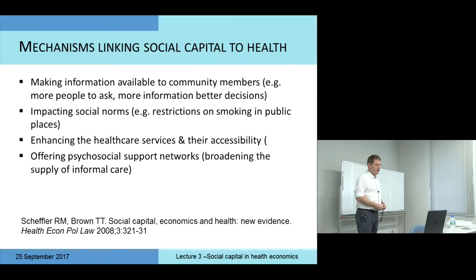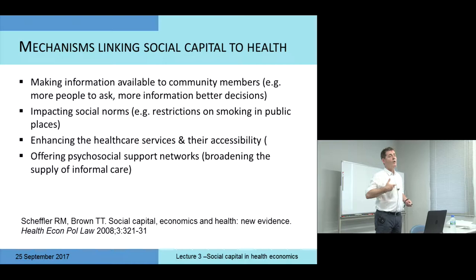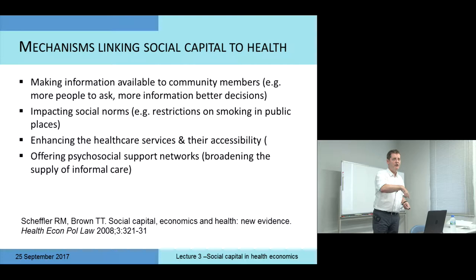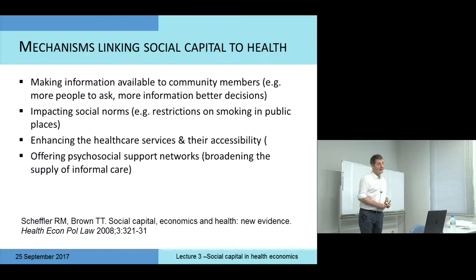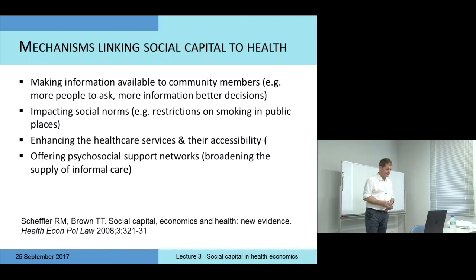We'll come to another example: social norms. In some descriptions of social capital it's framed in terms of social norms, with the view that a social norm can influence people's behaviour in a very positive direction. But we can also think social norms might go in the wrong direction — suppose the social norm was to act in a discriminatory way against groups not part of your particular culture. That has been the case in some countries at some times in history. That's not going to generate good health outcomes.